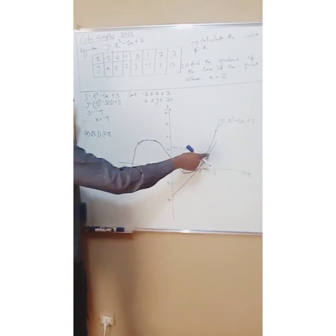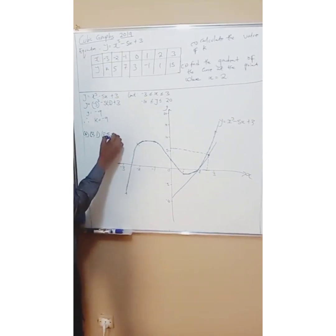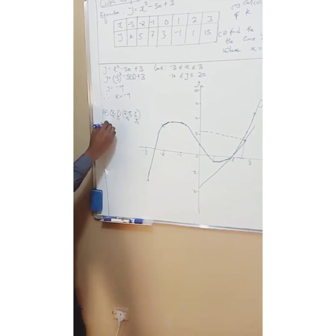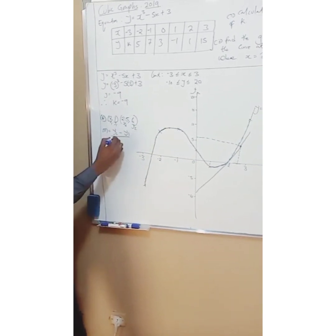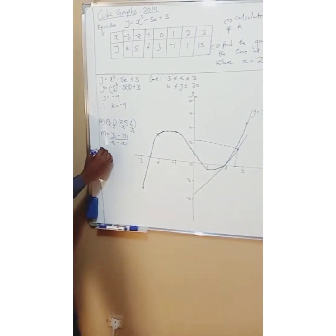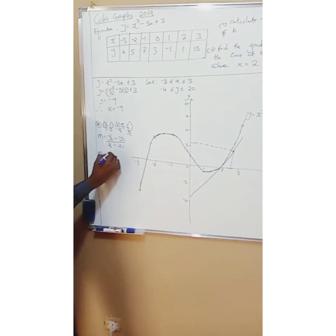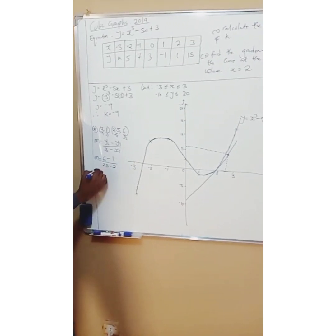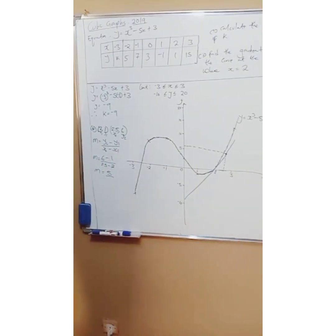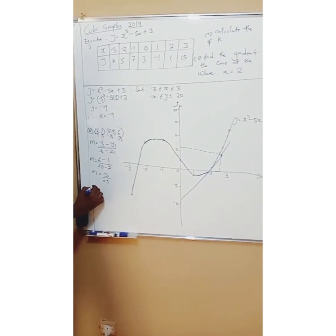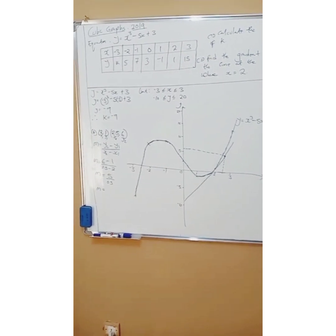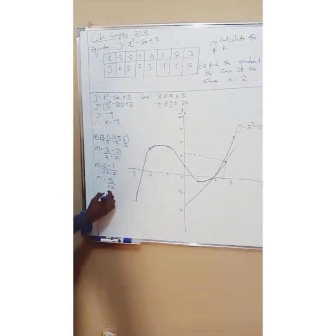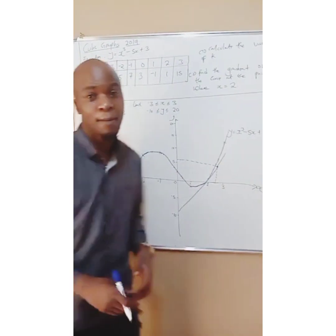Say I pick the second point and read x = 2.5 and y = 6 from the graph. Always start with the x-value when reading. Label the points: x₁ = 2, y₁ = 1, x₂ = 2.5, y₂ = 6. The gradient formula is m = (y₂ − y₁) / (x₂ − x₁), so m = (6 − 1) / (2.5 − 2) = 5 / 0.5 = 10. My gradient is 10.